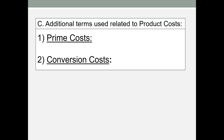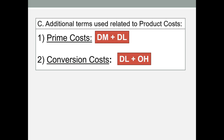Two additional terms: prime costs refers to direct material plus direct labor. That term was coined at the turn of the century when the primary costs of production were materials and labor. Now, overhead has become a major cost of production with automation, but the term has stuck. Conversion costs are direct labor and overhead — the cost of converting materials.